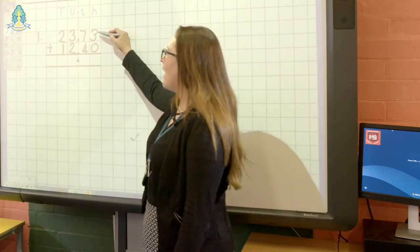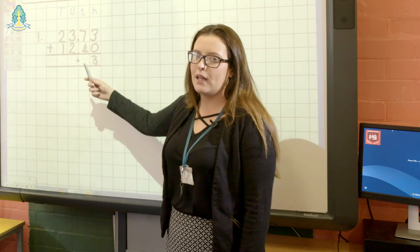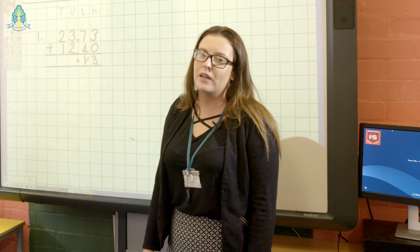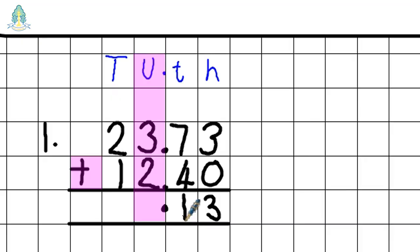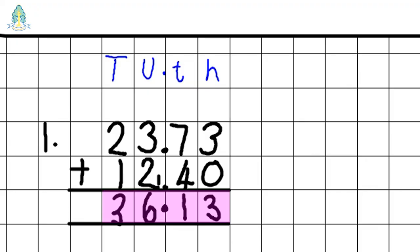Starting here, we have three add zero, allowing us to put down a three in the hundredths column. We then move on to our tenths column: seven add four gives us eleven tenths. As we can't put down eleven tenths, we put down one tenth and carry ten tenths over — ten tenths is the same as one unit. Three add two is five; adding on our one that we carried over gives us six. Two add one is three, giving us a final answer of thirty-six point one three.